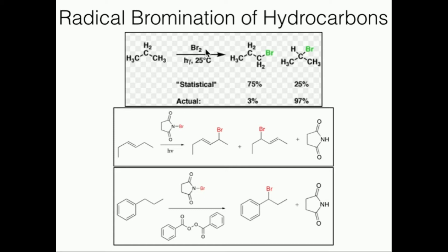We're going to radically brominate. We do not radically fluorinate — fluorine really does nothing in organic. And we also do not radically iodinate. So the only thing we're going to use is radical bromination. This is very useful for getting alkanes to be reactive. We turn the alkane into a bromoalkane — in this case, 2-bromopropane. We can also do a type of bromination on alkenes and carbon chains attached to benzene.